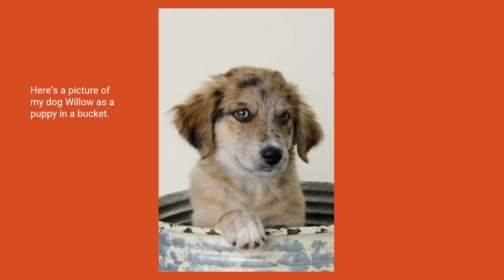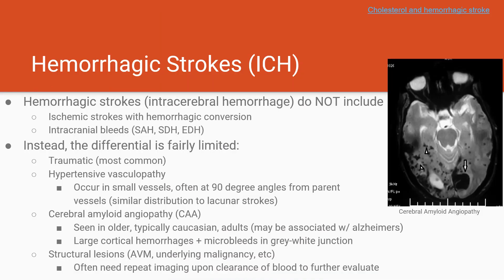Ischemic stroke is a doozy, but things get simpler now. Let's talk about hemorrhagic stroke — it's a lot simpler to classify. When we refer to primary hemorrhagic stroke, we're talking about intracerebral hemorrhage, or ICH. This does not refer to ischemic strokes with hemorrhagic conversion, and it doesn't refer to subarachnoid hemorrhages, subdurals, or epidurals. There are really only a limited number of things that can cause a true ICH.